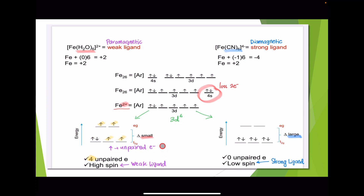Now count the unpaired electrons: 1, 2, 3, 4 — with one orbital paired, there are 4 unpaired electrons. This is the weak field ligand, so this complex is high spin, and delta is small.